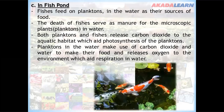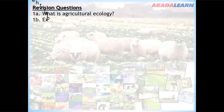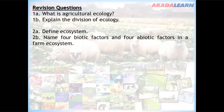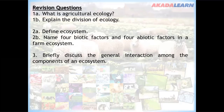Revision questions: (1a) What is agricultural ecology? (1b) Explain the divisions of ecology. (2a) Define ecosystem. (2b) Name four biotic factors and four abiotic factors in a farm ecosystem. (3) Briefly discuss the general interaction among the components of an ecosystem. If you find it difficult to answer these questions, go over the video again. Thank you for being on this platform.